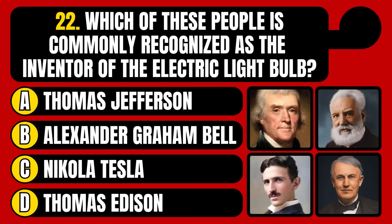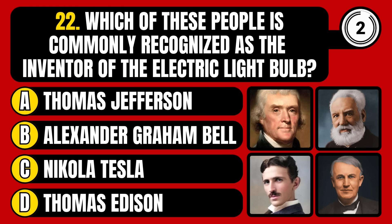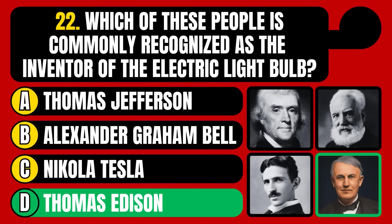Which of these people is commonly recognized as the inventor of the electric light bulb? Thomas Jefferson, Alexander Graham Bell, Nikola Tesla, or Thomas Edison? The correct answer is option D, Thomas Edison.